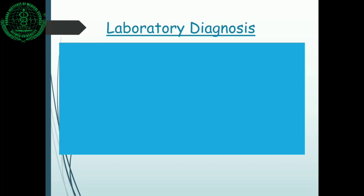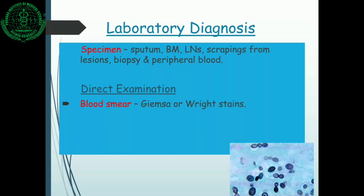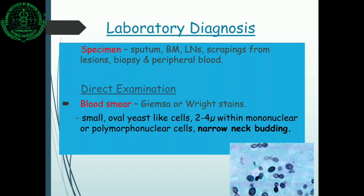For laboratory diagnosis, specimens collected include respiratory specimens — especially sputum and bronchoalveolar lavage — as well as bone marrow, lymph node biopsy, scrapings from cutaneous or mucocutaneous lesions, and peripheral blood. Peripheral blood can be examined with staining techniques such as Giemsa stain. We can see small oval yeast cells approximately 2 to 4 microns in size within mononuclear or polynuclear cells such as monocytes or macrophages. The organism can also be detected with the fluorescent antibody technique.